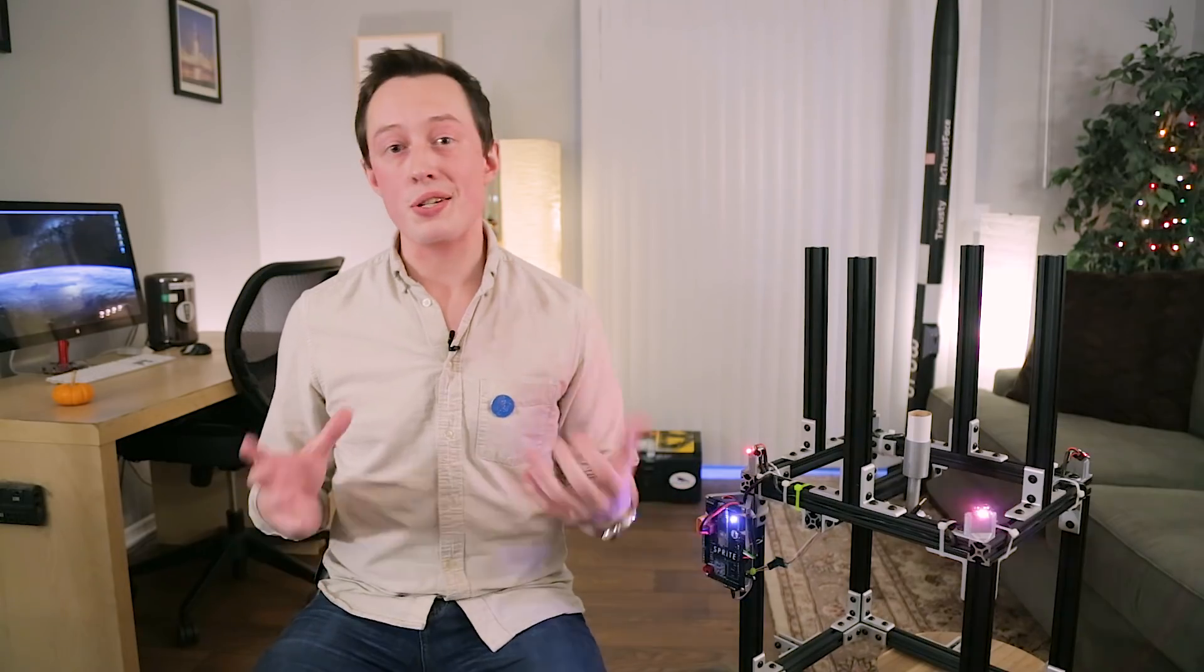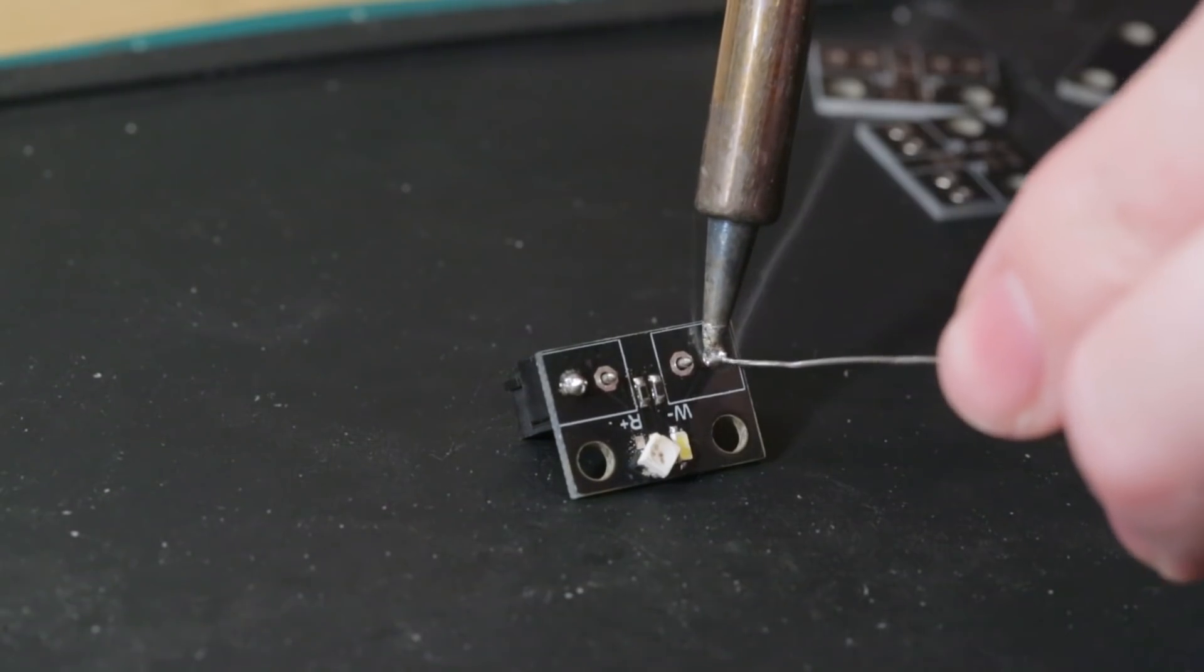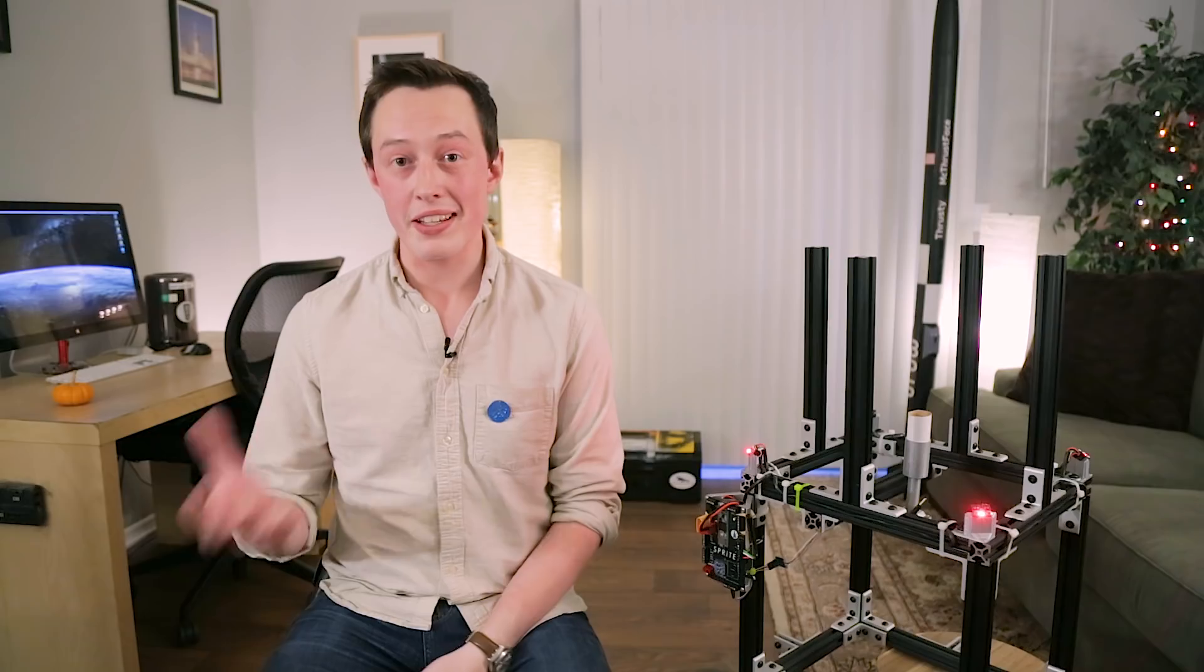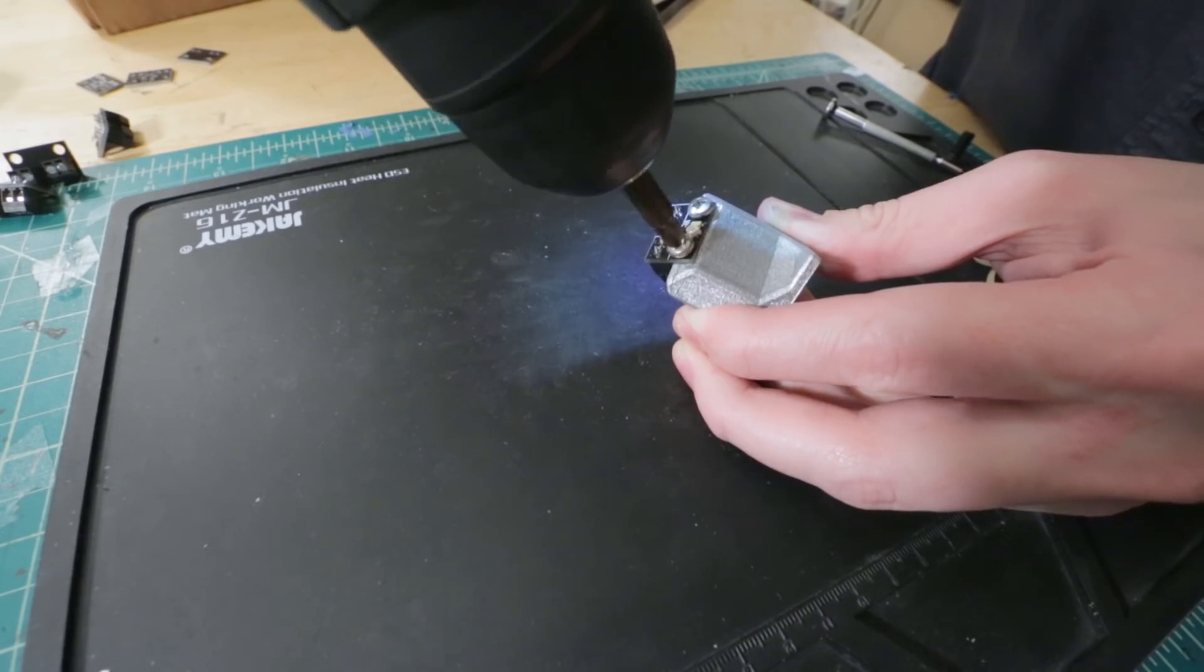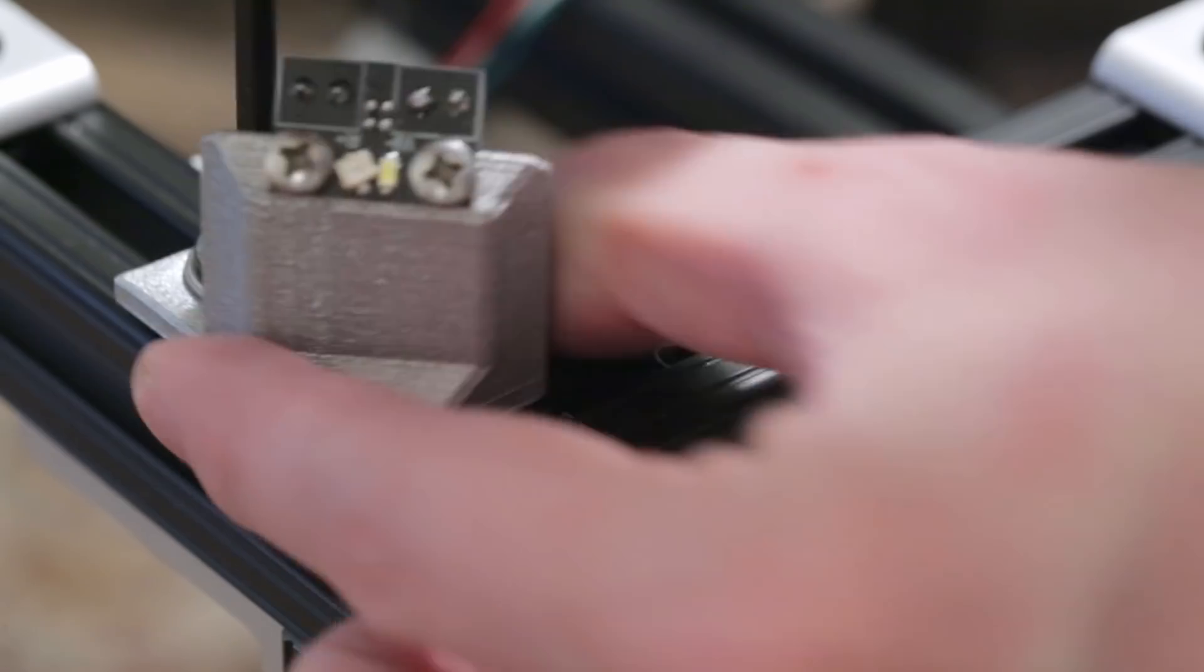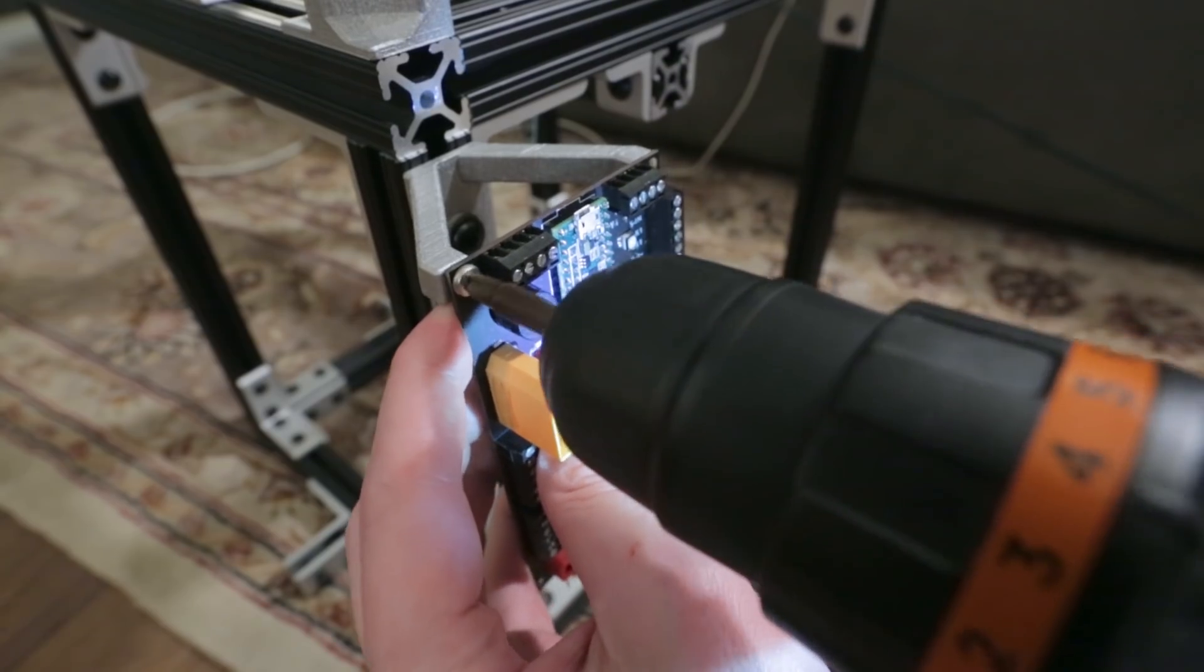The final step here is to solder on the terminal blocks and then repeat the process a few times for the other LED boards. And once mounted on a little 3D printed stand I put an LED board at each corner of the test stand and wired them up.